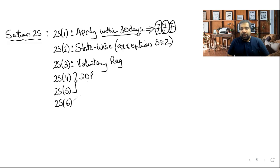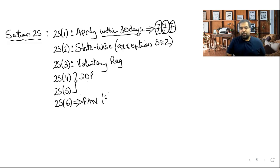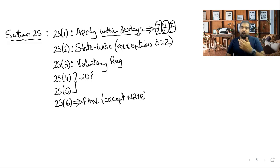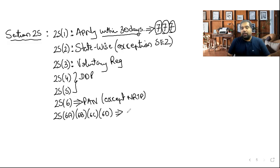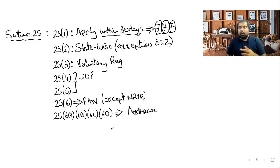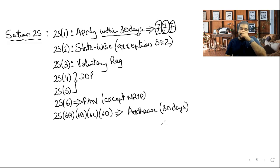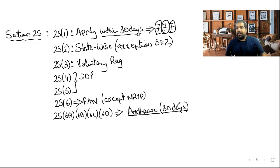Section 25(6): PAN is compulsory for GST registration — you cannot apply without a PAN, except for Non-Resident Taxable Persons, who can use their passport and someone else's PAN. Sections 25(6A-6D): Aadhaar authentication is required when applying for GST. If you don't authenticate Aadhaar, the officer gets 30 days (previously 60) to physically verify your address, preventing fraudulent 'fly-by-night' registrations.